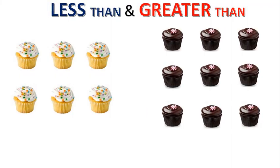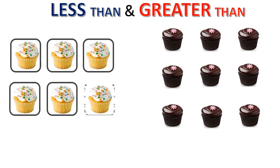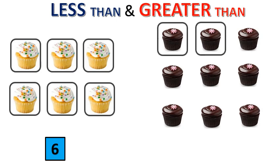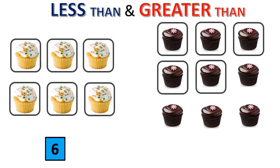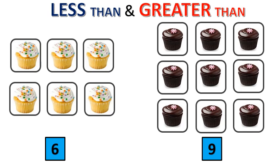Now let's take this example. Here we have a number of cupcakes. Let's start counting our first white cupcakes: 1, 2, 3, 4, 5 and 6. So here we have 6 white cupcakes. Now let's count the brown cupcakes: 1, 2, 3, 4, 5, 6, 7, 8 and 9. There are 9 brown cupcakes. You have to find which one is greater — either 6 or 9. Here, number 9 is greater than 6 and 6 is less than 9.